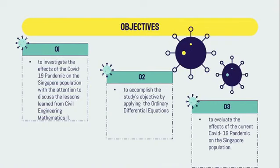Let's continue with the objectives. The first objective is to investigate the effects of the COVID-19 pandemic on the Singapore population, with attention to discuss the lessons learned from civil engineering mathematics. Next is to accomplish the study's objective by applying ordinary differential equations. The last objective is to evaluate the effects of the current COVID-19 pandemic on the Singapore population.